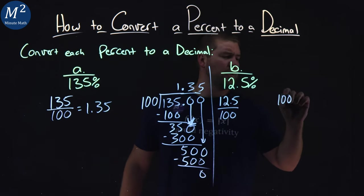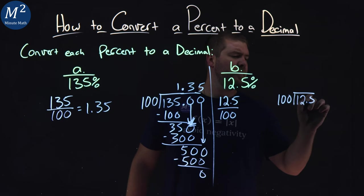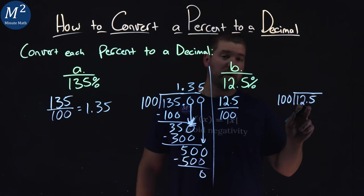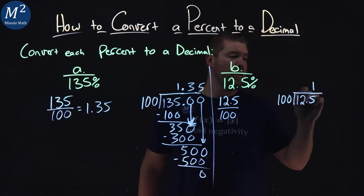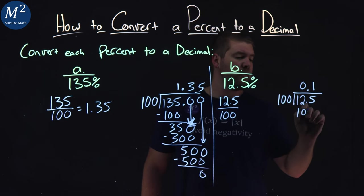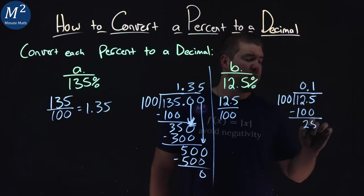So 100 goes into 12.5 here. Well, like 125, 100 goes into 125 right here one time. Put a 1 here, don't forget the decimal, put a 0. 1 times 100, 100. Subtract the two, 125 minus 100, we get 25.